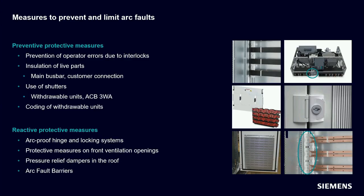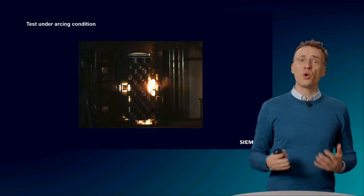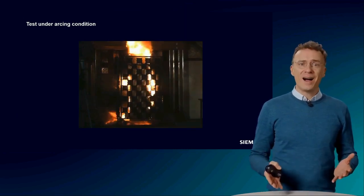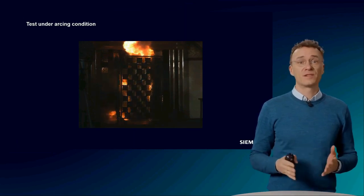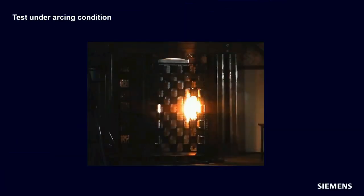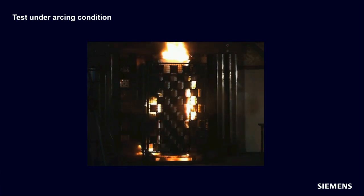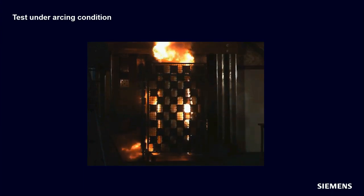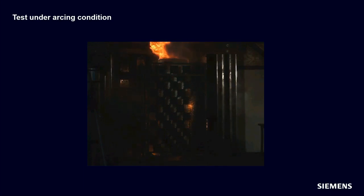But is that all enough? As always, it depends on what is to be achieved. The requirements of IEC Technical Report 61641 can be met in any case. However, when limiting the arc fault with the help of passive measures, an arc flash burning time of 300 milliseconds can be expected. This duration means a very high energy conversion.